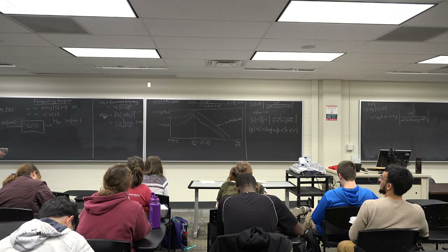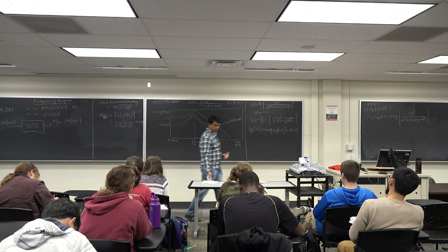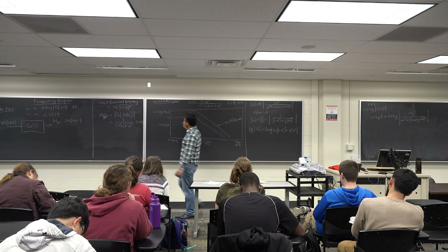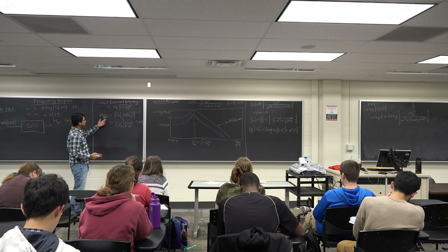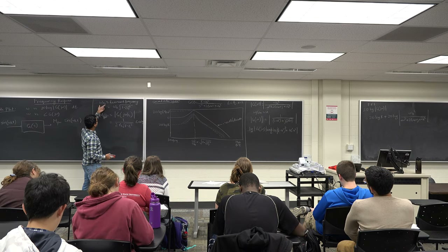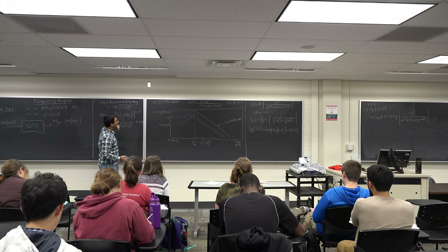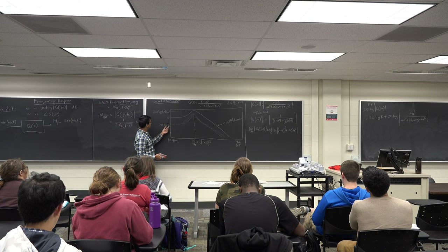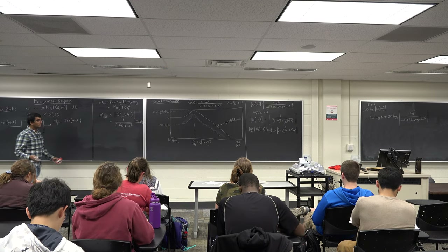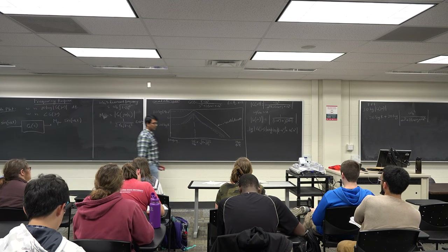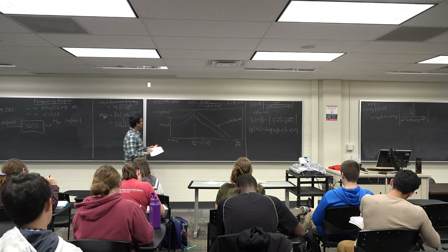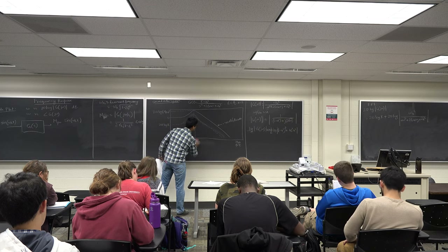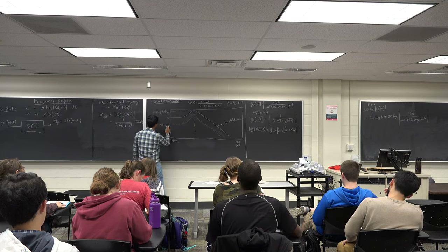So if you have a second-order system, by looking at the Bode plot you can infer the entire transfer function: the peak gives you ζ, the resonant frequency gives you ωn, and the low-frequency gain gives you K. There is another term for second-order systems known as bandwidth.